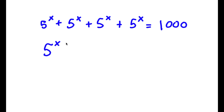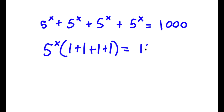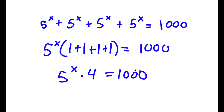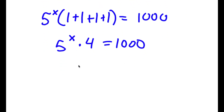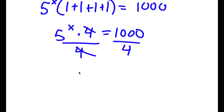So now I have φ to the power of x times 1 plus 1 plus 1 plus 1 is equal to 1000. Now 1 plus 1 plus 1 plus 1 is 4, so I have φ to the power of x times 4 is equal to 1000. If I divide both sides by 4, these two cancel out and I get φ to the power of x is equal to 250.